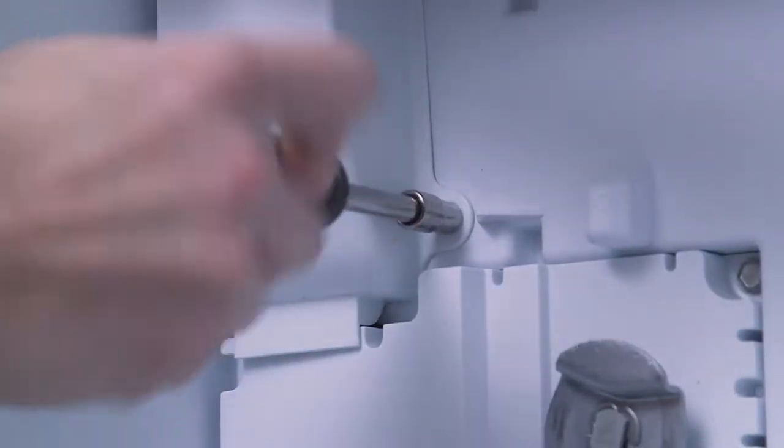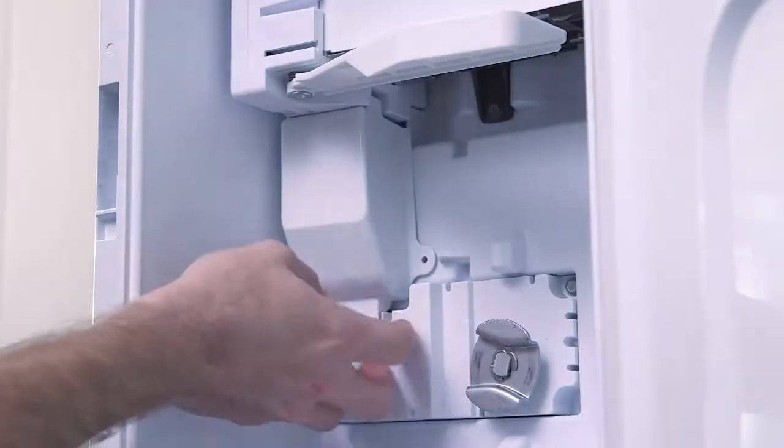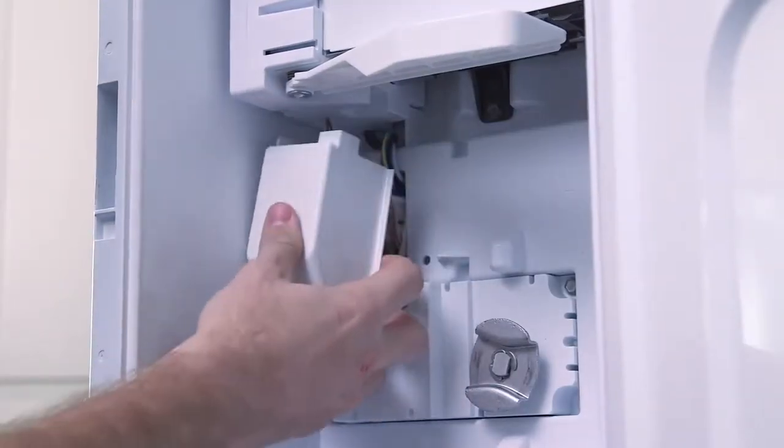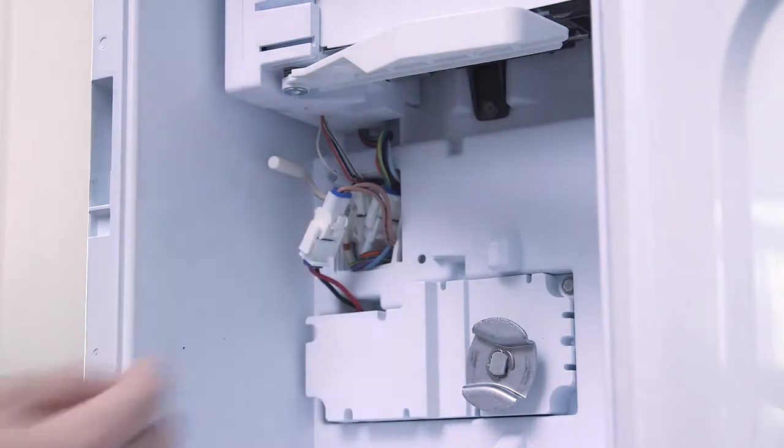Unscrew and remove the 5/16 inch hex screw head that holds the wire harness cover in place. Lift the bottom of the wire harness cover and remove it. Note that the thermistor will automatically disconnect from the cover when removed.